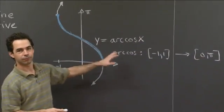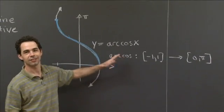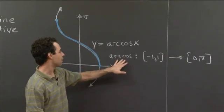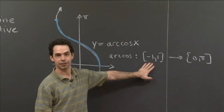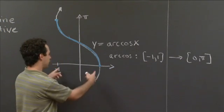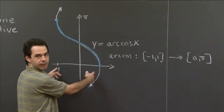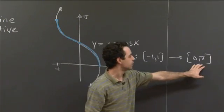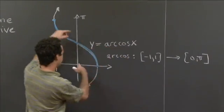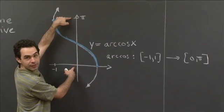And it spits out values between 0 and pi. So this is a sort of fancy notation that mathematicians use to say the arc cosine function takes values in the interval minus 1, 1. So it takes values between negative 1 and 1, and it spits out values in the interval 0 pi. So every value that it spits out is between 0 and pi.